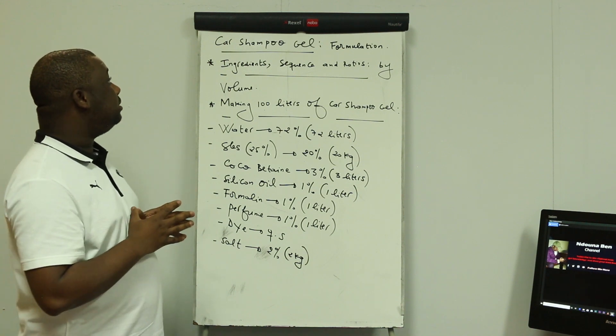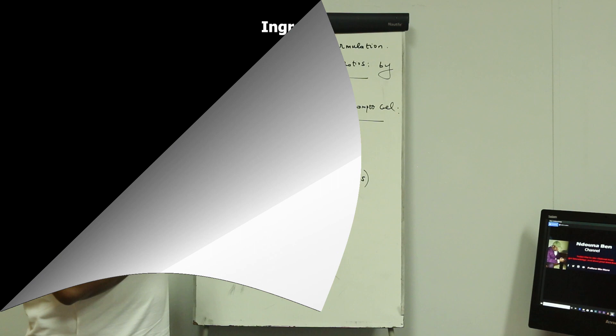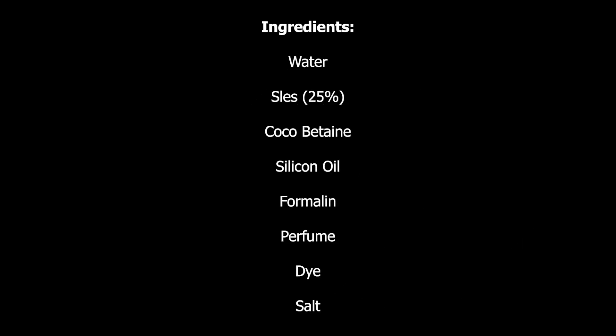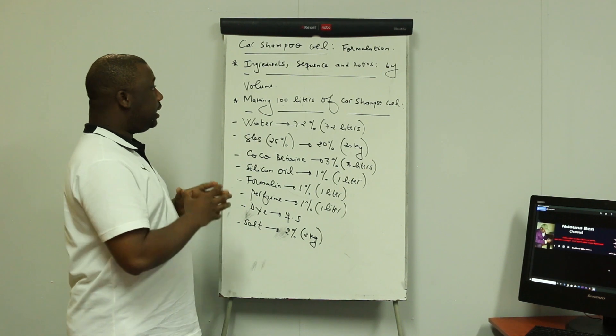What are the ingredients you need to manufacture the car shampoo gel? The ingredients are: water, SLES (Sodium Lauryl Ether Sulfate) at a strength of 25%, cocoa betaine, silicon oil, formalin, perfume, dye, and salt. These are the ingredients you need to manufacture the car shampoo gel.